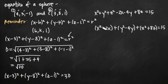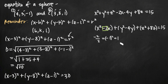To complete the square, we take the coefficient on the first-degree term, divide by 2, and square it. For x, the coefficient is negative 2; divide by 2 gives negative 1; squared gives positive 1. So we add 1 to the x group. For y, the coefficient is negative 4; divide by 2 gives negative 2; squared gives positive 4. So we add 4 to the y group. We also add each value to the right-hand side to maintain equality.